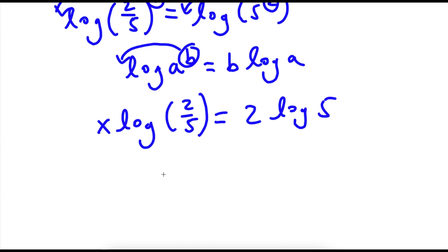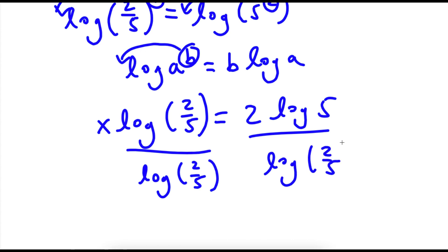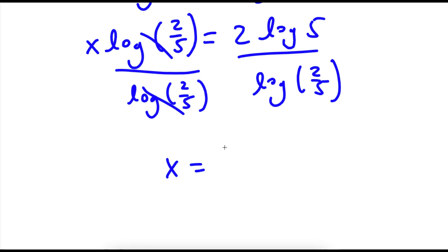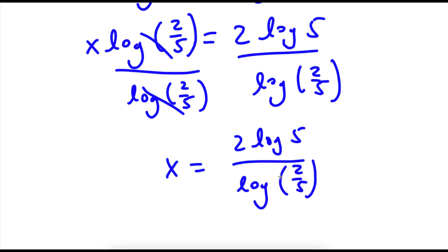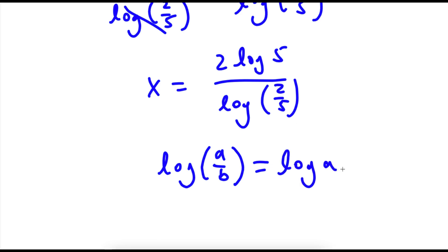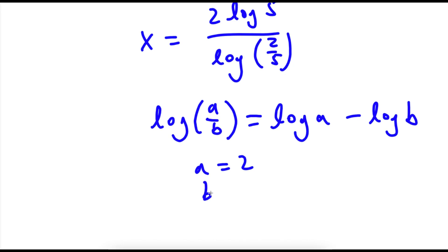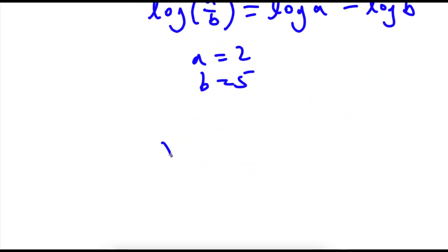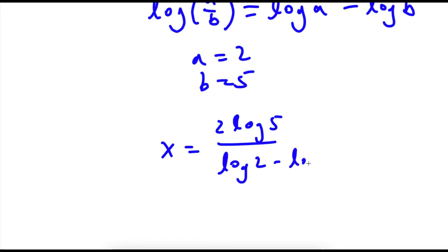Now I'm going to divide both sides by log 2 over 5, so those cancel out and I'm left with x is equal to 2 times log 5 over log 2 over 5. Now, if I have something in the form log a over b, this is equal to log a minus log b. So in this case, a is equal to 2 and b is equal to 5, so log 2 over 5 equals log 2 minus log 5.